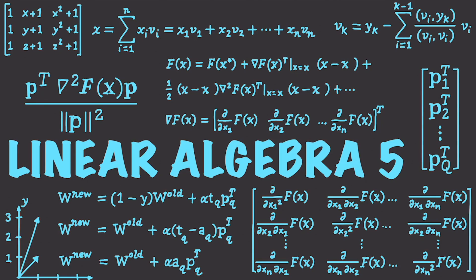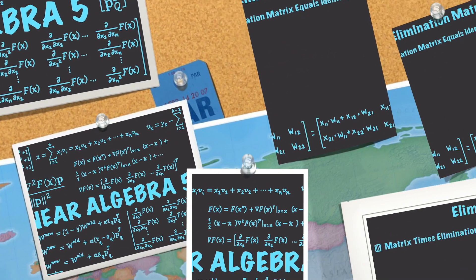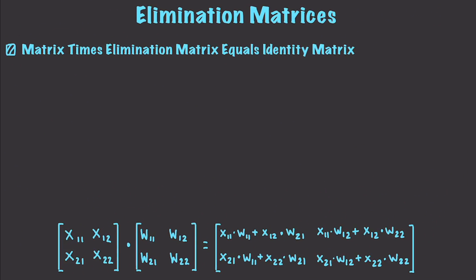Hello Internet, welcome to part 5 of my linear algebra tutorial series. In this part I'm going to show you how to create elimination matrices, and we are going to further explore vectors. First up, we're going to talk about elimination matrices — basically when you multiply a matrix by the elimination matrix you are going to get an identity matrix, and I'm going to show you a brand new way that is considerably easier to create these.